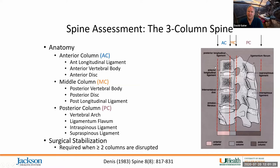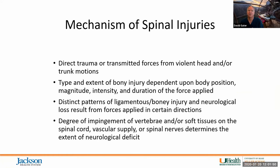Of note, if the middle column was disrupted, you almost always had involvement of either the anterior or posterior columns, or both. So going back to the early 1980s, surgical stabilization of the spine was indicated if two or more of these columns were involved.